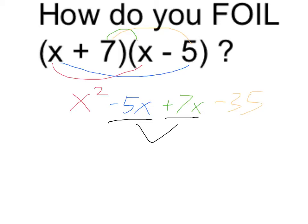We notice that the middle two are like terms, they both contain the x, so negative 5x plus 7x is 2x, and the whole thing is x squared plus 2x minus 35.